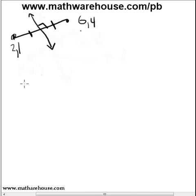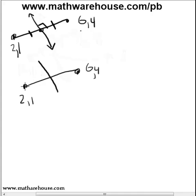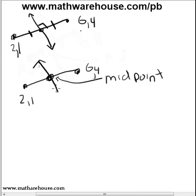Going back to how we're going to approach these problems: in general, you'll have a pair of points. The line we want will cut the segment in half — in other words, it will go through the midpoint of the original segment. So the midpoint gives us a point that lies on the perpendicular bisector.